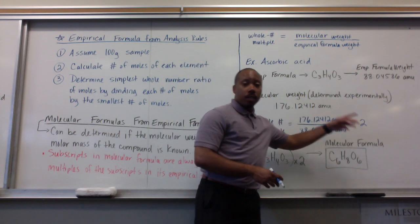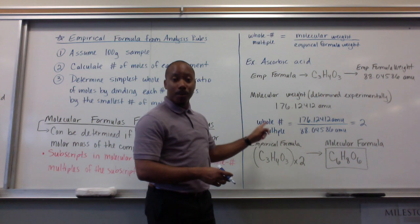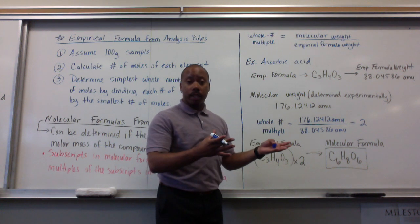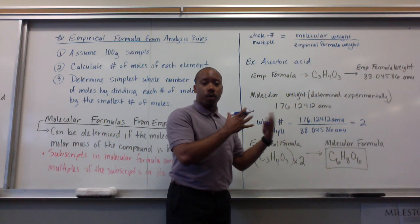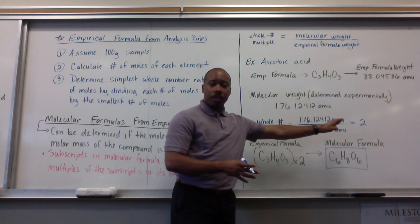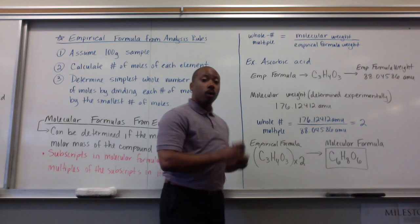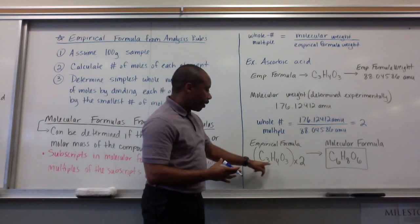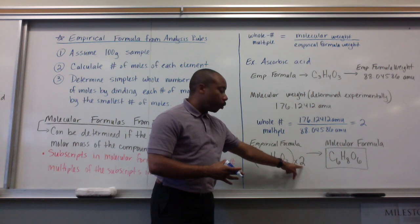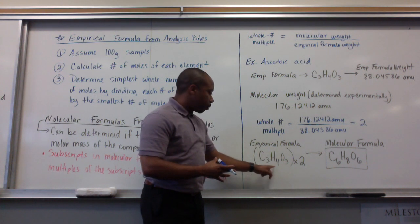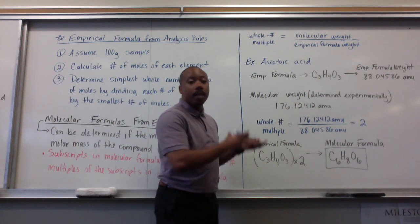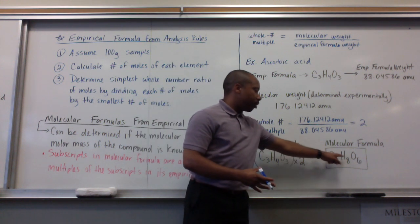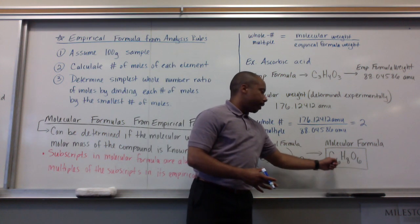When I have these two pieces of data, I can plug them into my new equation. And I have my molecular weight on top, 176.12412 AMUs divided by my empirical formula weight, which is 88.04586 AMU. And it gives you approximately 2. We're going to have to round these numbers because we're looking at whole number multiples. Most of the time, it's going to give you pretty much a solid whole number. Once we have this, what we do with it is we apply it to our empirical formula. Our empirical formula was C3H4O3 times 2. This 2 means that each of my subscripts is a multiple of 2 in the molecular formula. So, we multiply all of these times 2, then we get C6H8O6, and this is my molecular formula.